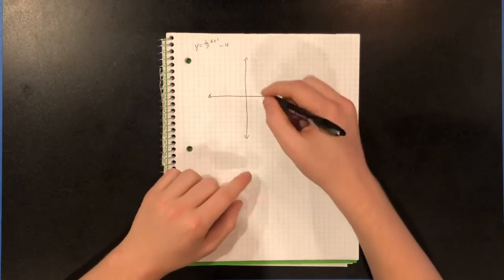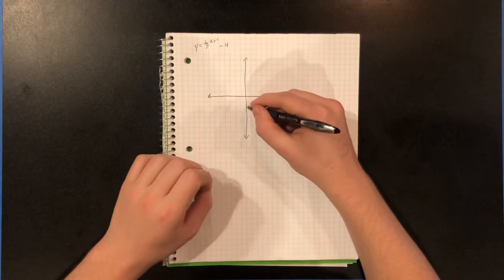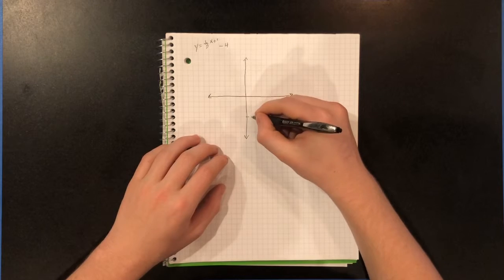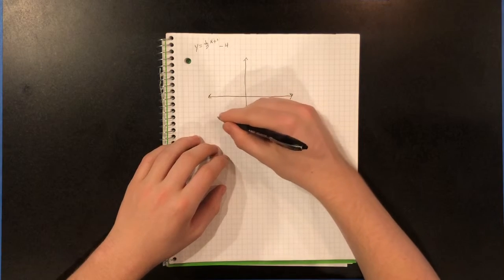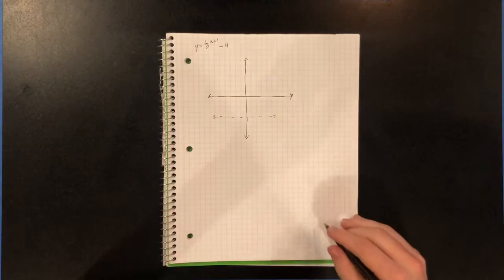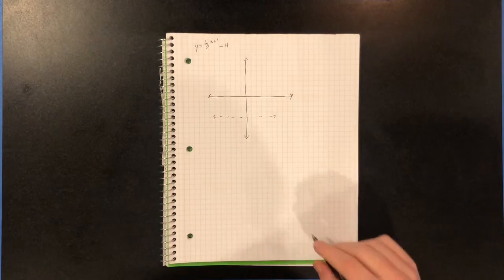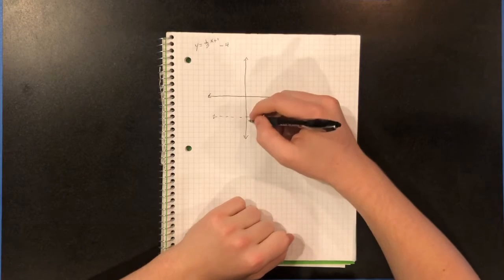So she's at negative 4, so we know our asymptote is going to be at negative 4. Dotted one there. And then since that's our asymptote.